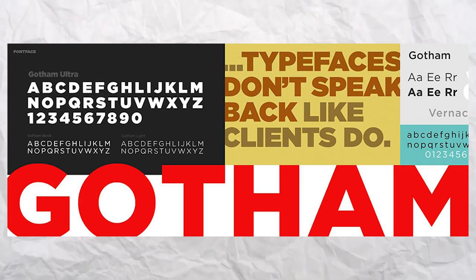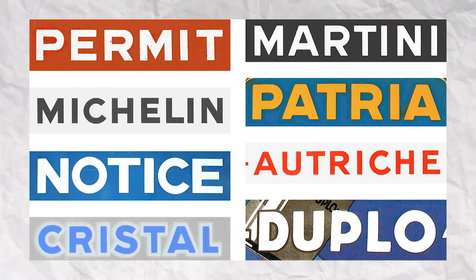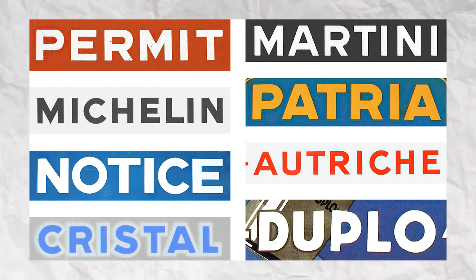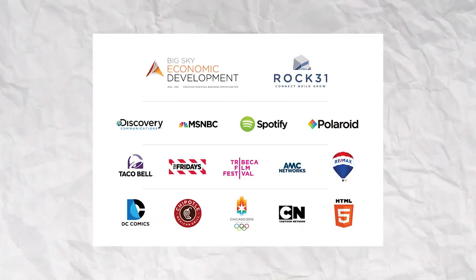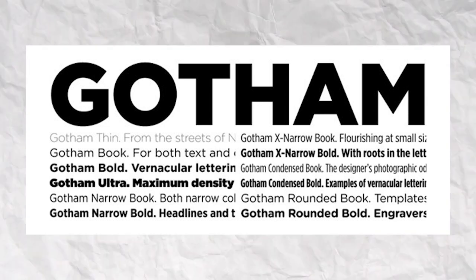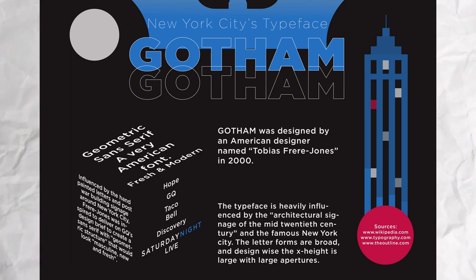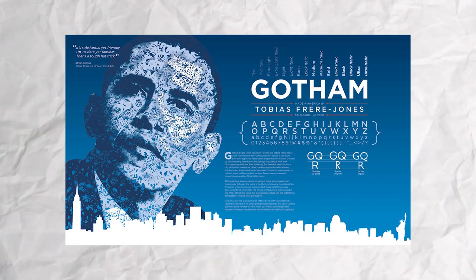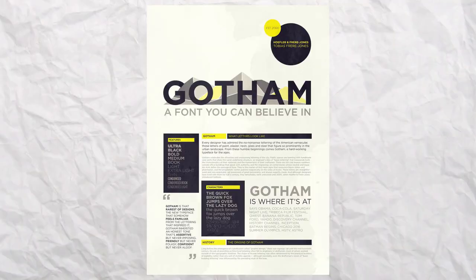Number seven is Gotham. Gotham is a geometric sans-serif typeface designed in the year 2000, with letterforms inspired by the signage designs of mid-20th-century New York. It has been used in the rebranding of popular brands like Cartoon Network, Twitter, and Chanel. The Gotham font family comes in 66 styles, is supported in 60 languages, and is highly versatile. It became especially famous as the font used in Barack Obama's 2008 presidential election campaign, making it one of the most popular typefaces of the 21st century.